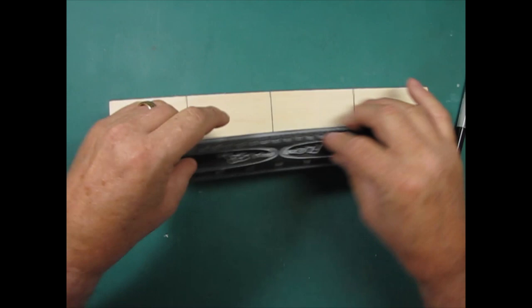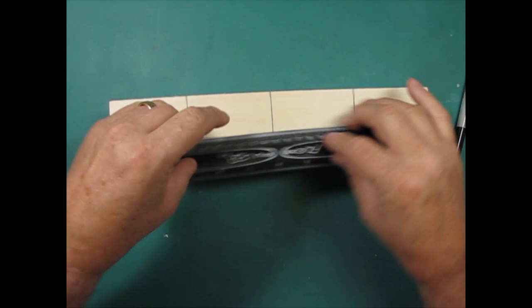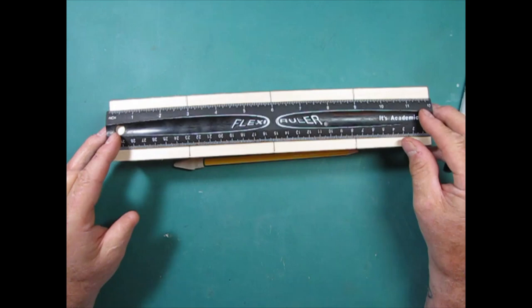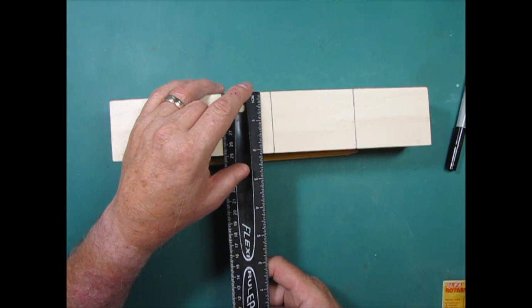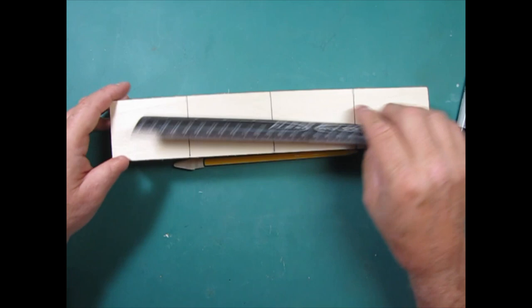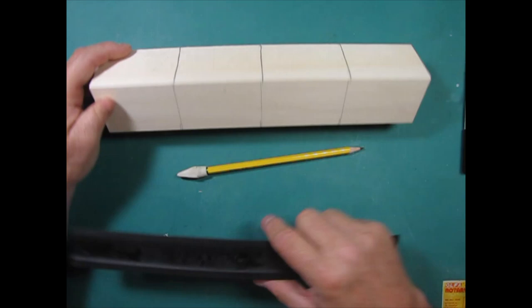So first step we want to do is lay out our block. As you can see, I've got my 12 inch block here and I've laid out each section in three inches. So again, about three inches there. I've got a little, this block is actually a little bit longer, it's about two and an eighth or a little bit wider, and it's just a shade over 12 inches, but we'll make it work.